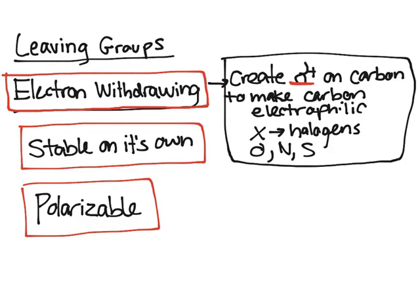The next thing to consider is a good leaving group has to be stable once it has left, right? Because if something isn't stable on its own after it left, it'll come back and re-attack that carbon to try and attach back on. And so nothing would really get done. And so if it's stable once it has left, which means stable on its own, it will be less likely to come back and try to attach to that carbon.